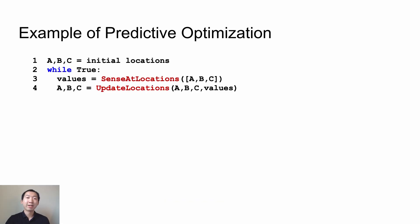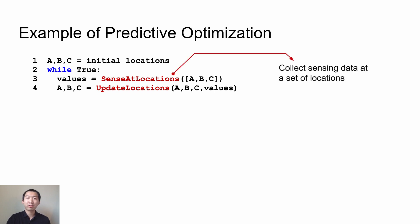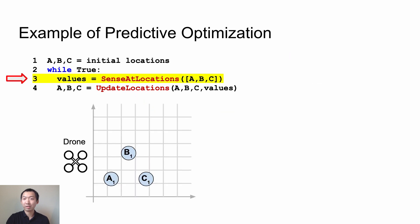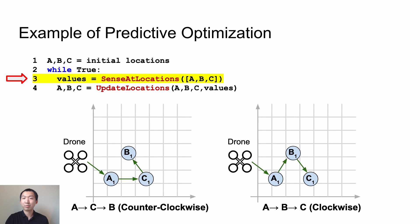Next, we show an example of the predictive optimization. Suppose we have a short program that consists of an active sensing loop. At each iteration, the program first uses drones to collect sensing data at three different locations. Then the program updates the locations based on the sensing values. When the program reaches line three in the first iteration, we show a possible scenario here. In this scenario, we only have one drone. At this moment, there are two possible routes to visit these three locations. The drone can visit them in a counterclockwise way or clockwise way. Both of the two cases here are optimal.